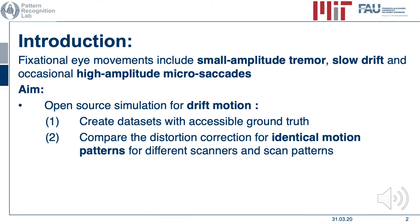Optical coherence tomography, among other ophthalmologic imaging systems, suffers from perpetual motion of the eye. These fixational eye movements, that occur once a human fixes their gaze on an object, include small amplitude tremor, slow drift, and occasional high amplitude microsaccadic motion.